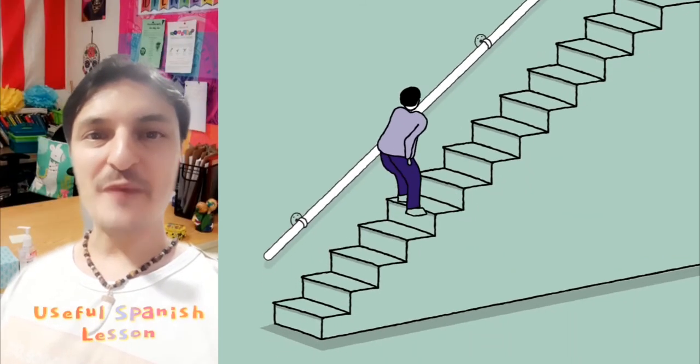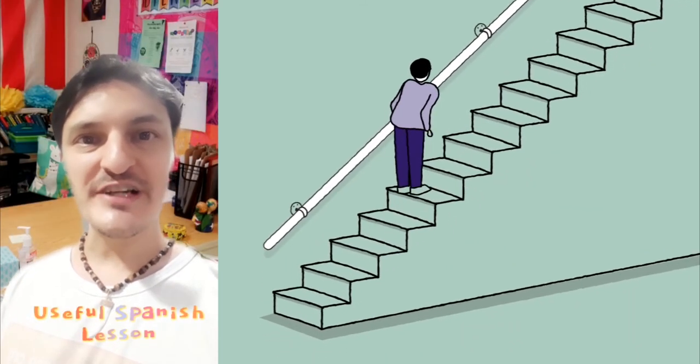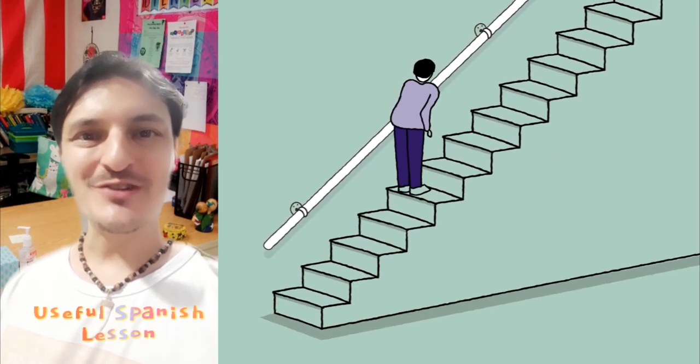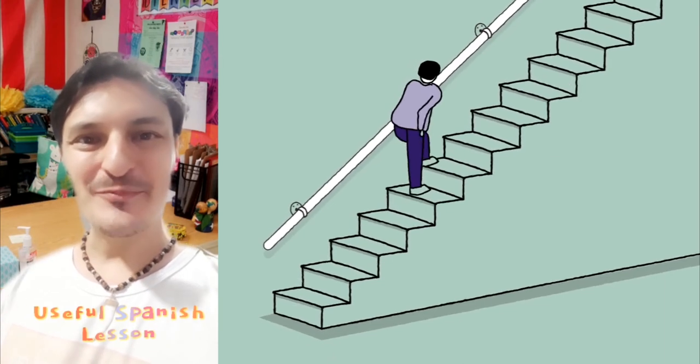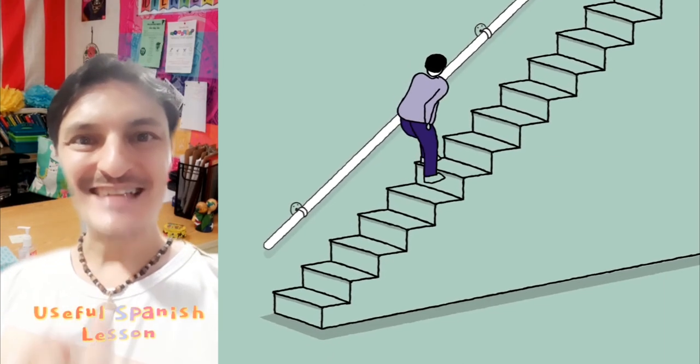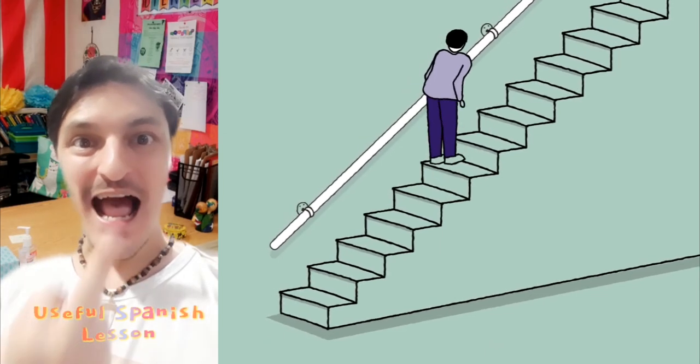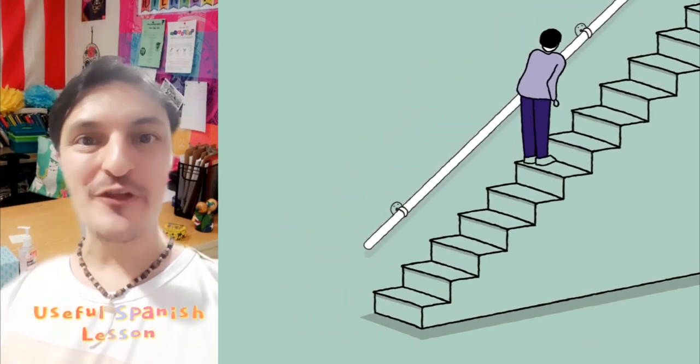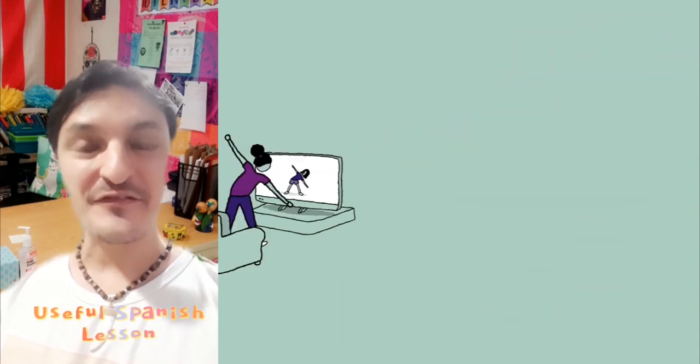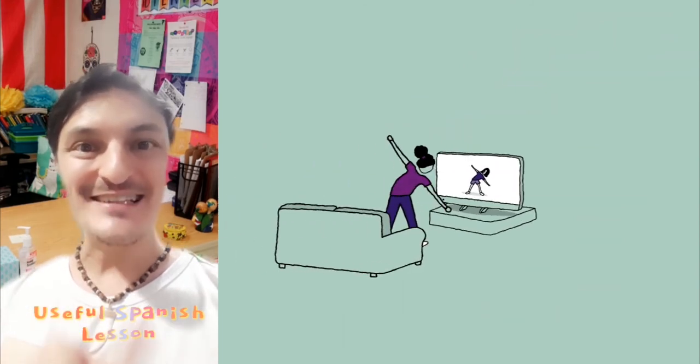After teaching two Spanish classes, I'm gonna teach you how to say something. How to send someone to go fuck himself. You tell the person: A la mierda. A la mierda. Literally, go to the shit. But it's like, go fuck yourself. A la mierda. Practice.